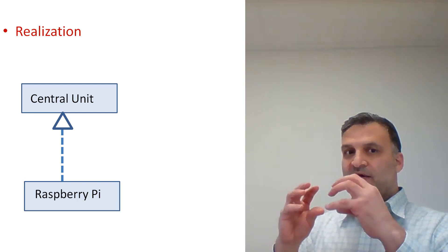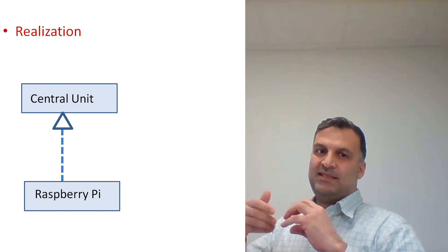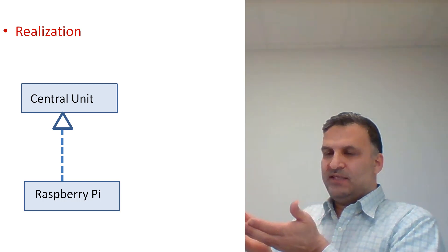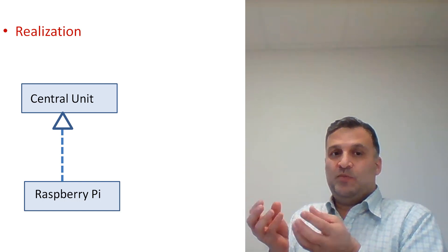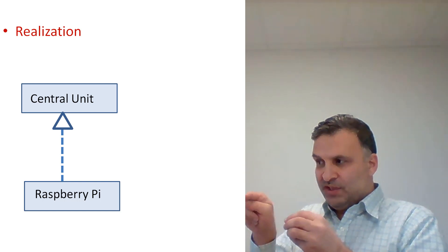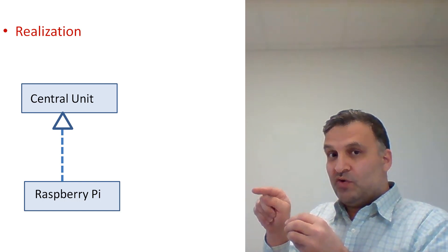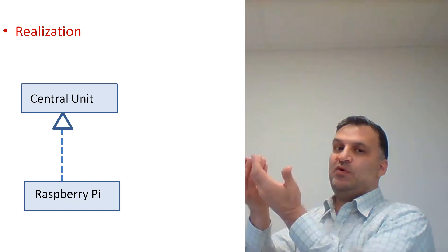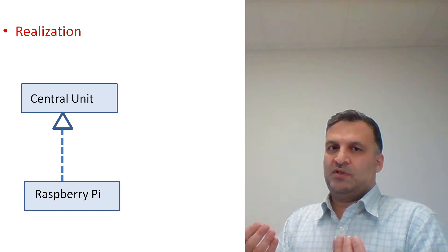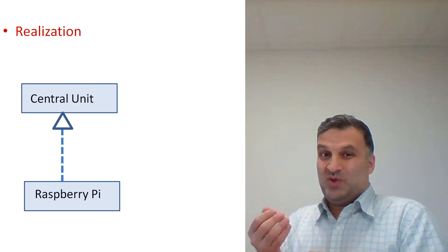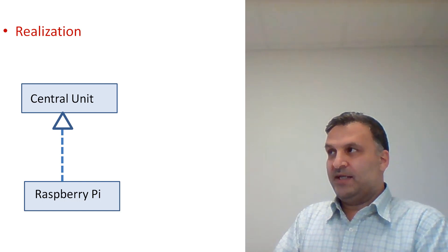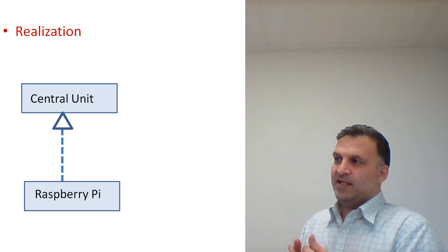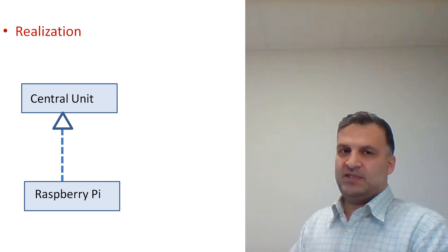Realization means we have two classes and one is a concrete realization of the other. For example, we talk about a central unit, and we said that Raspberry Pi is a small computer that realizes it. Even when we talk about Raspberry Pi here, we are not talking about a specific object — we are talking about the class. We represent this realization relationship with a hollow triangle and a dashed line.